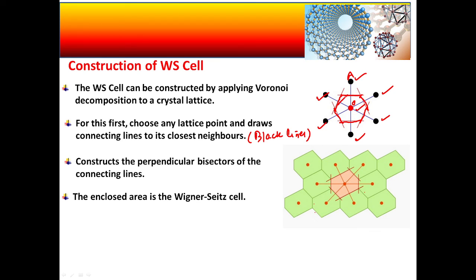You can see this is the region representing the WS cell. For all such neighboring lattice points you can construct a lot of other Wigner-Seitz cells — all these are also Wigner-Seitz cells. I have shown one as the selected one, but others are also Wigner-Seitz cells. This is the general method of constructing the Wigner-Seitz cell. Thank you.